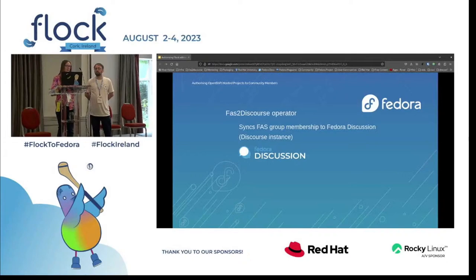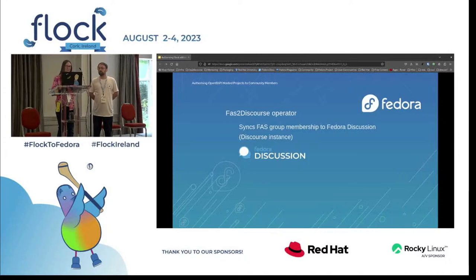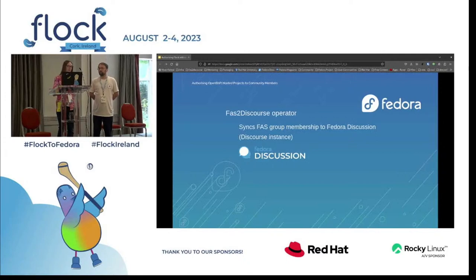Once we created the CommunityShift Authorization operator we realized we could reuse the solution for any other project, and one emerged soon after — called FaSTA Discourse. FaSTA Discourse synchronizes the Fedora account system group membership with Fedora Discussion, which is a Discourse instance. It originated from a ticket from Matthew Miller, who got inspired by David's authorization operator solution and wanted to use the same technical approach to sync FAS groups with Discourse groups.